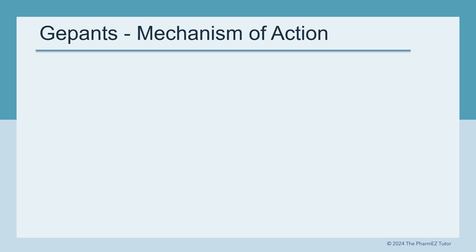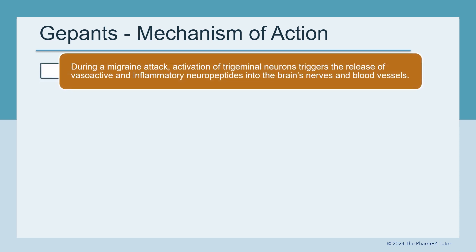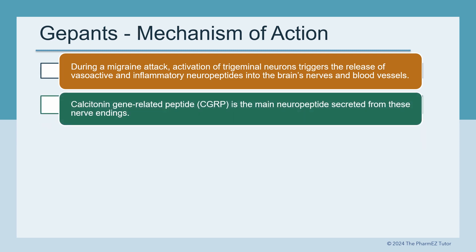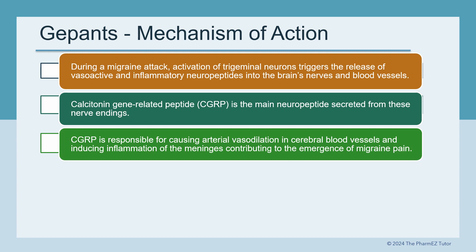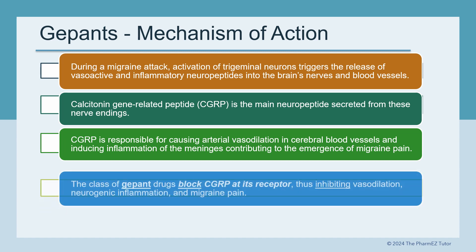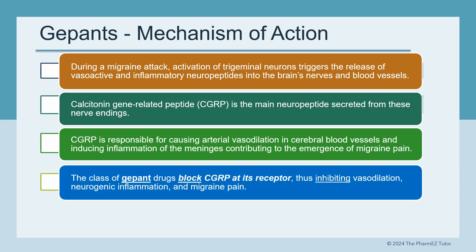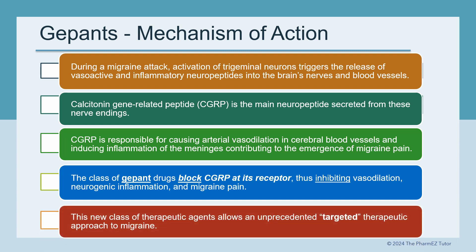Let's review the mechanism of action of G-PANs. During a migraine attack, activation of trigeminal neurons triggers the release of vasoactive and inflammatory neuropeptides into the brain's nerves and blood vessels. Calcitonin gene-related peptide, or CGRP, is the main neuropeptide secreted from these nerve endings. CGRP is responsible for causing arterial vasodilation in cerebral blood vessels and inducing inflammation of the meninges, contributing to the emergence of migraine pain. The G-PAN drugs block CGRP at its receptor, thus inhibiting vasodilation, neurogenic inflammation, and migraine pain. This new class allows an unprecedented targeted therapeutic approach to migraine.